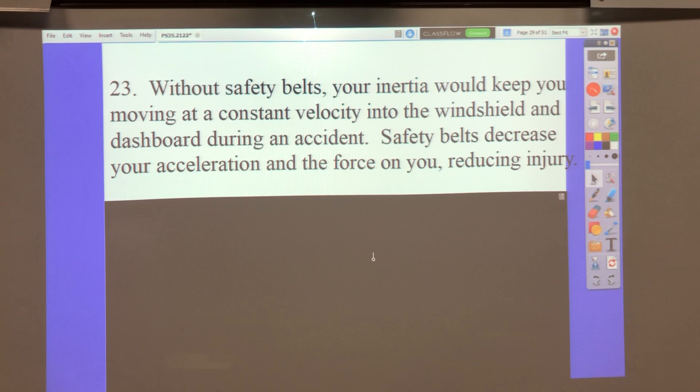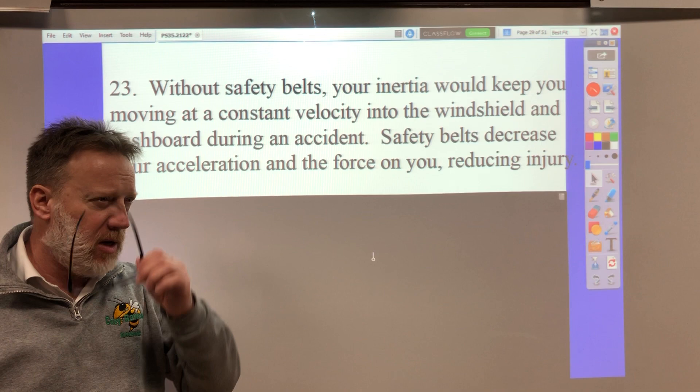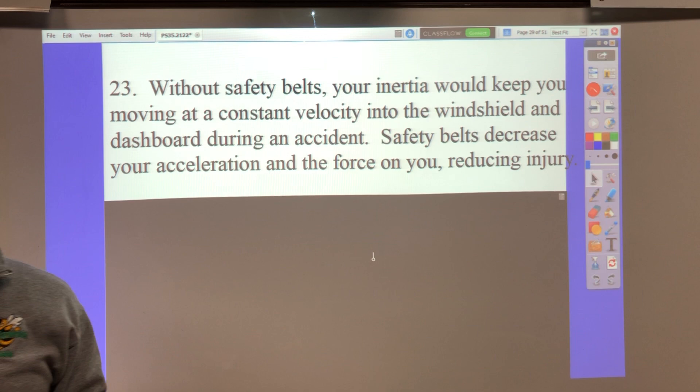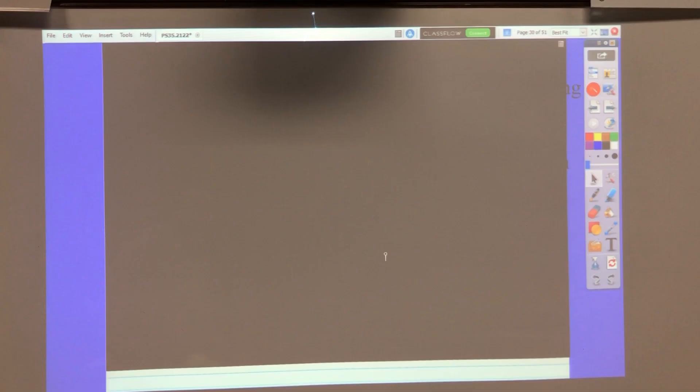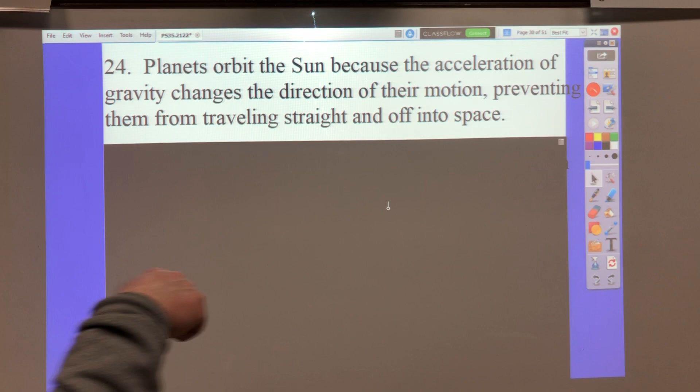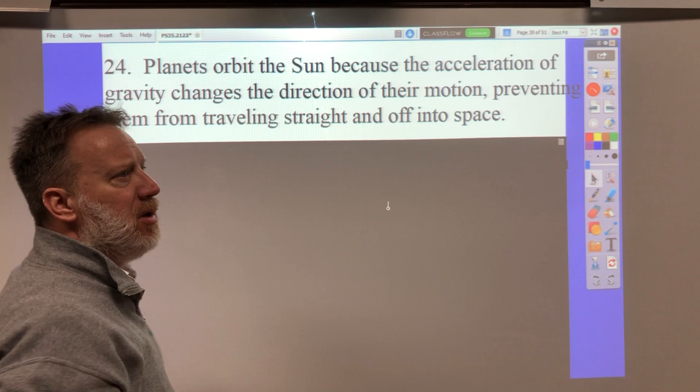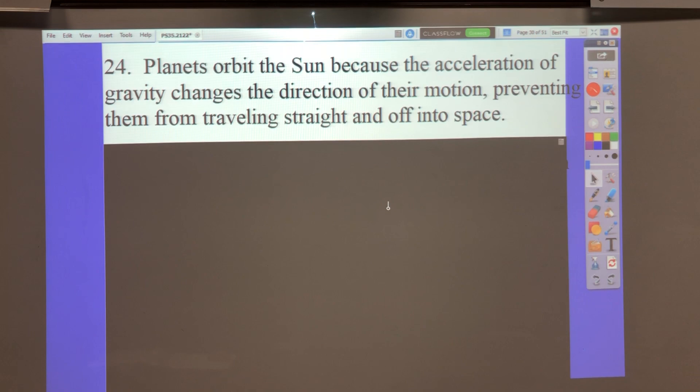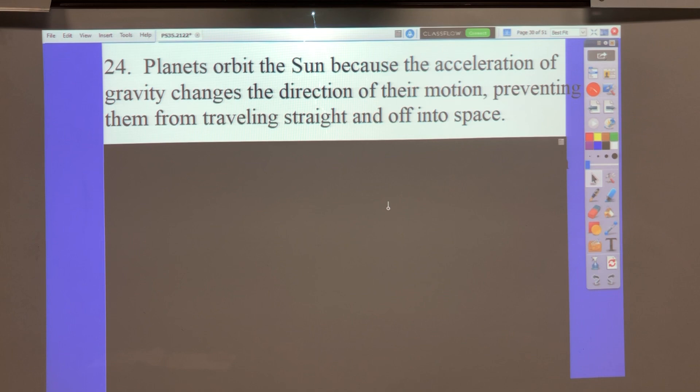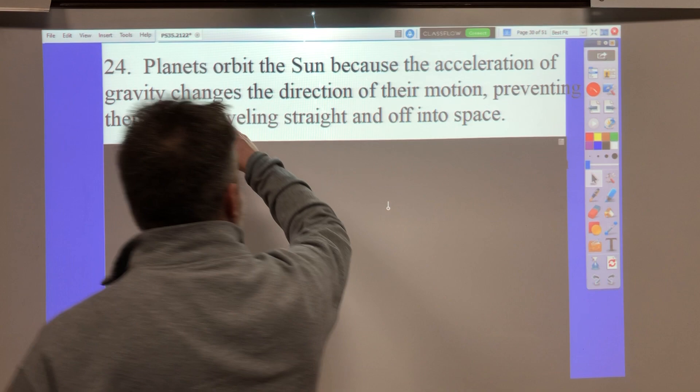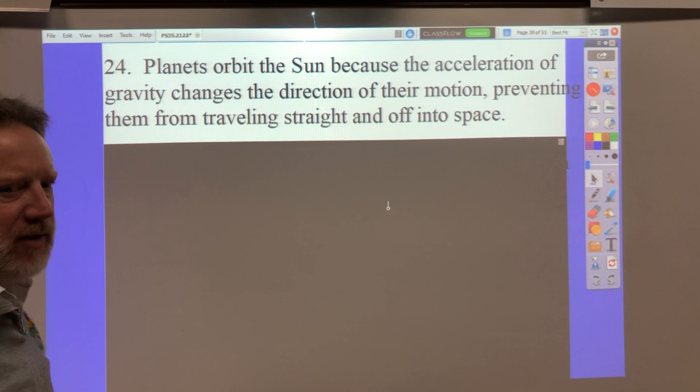Number 24, why do planets orbit the sun instead of traveling off into space? We're going to use Sir Isaac Newton's explanation here and say that large objects like the sun produce gravity. Planets orbit the sun because the acceleration of gravity of the sun changes the direction of their motion. It gives them a centripetal acceleration towards the center, much like, not much like, a little bit like, I've got this button on a string here for another class, whirling it around like this. So it's pulling that earth in a circle. This prevents them from traveling in a straight line off into space. It keeps pulling the earth in a circle around the sun, the gravity does. This is the same. That was number 24.